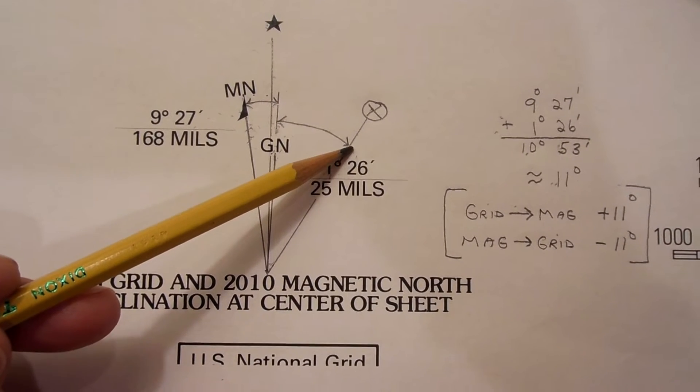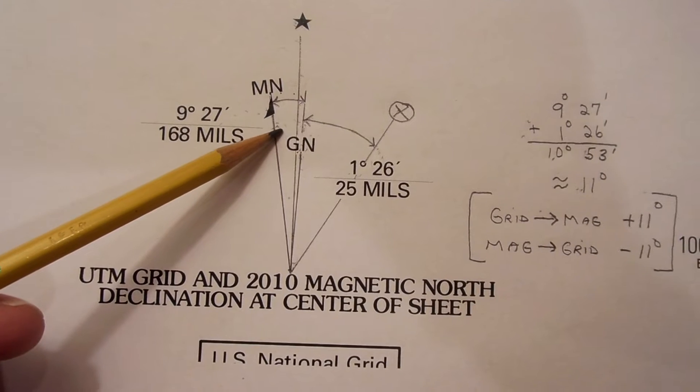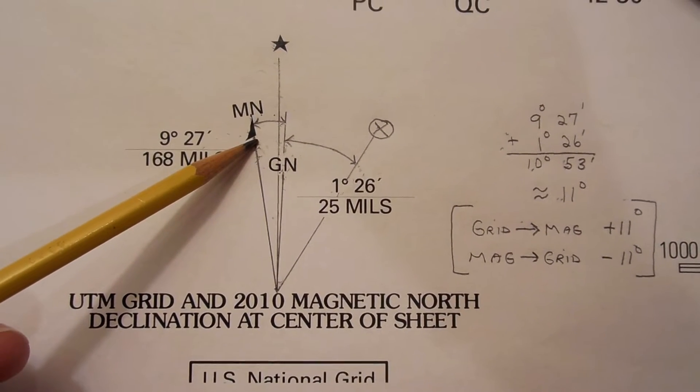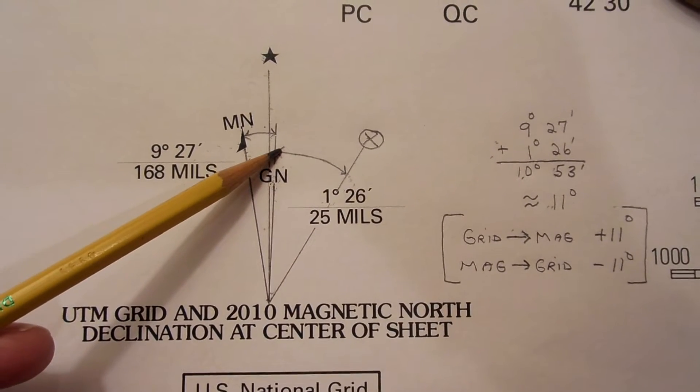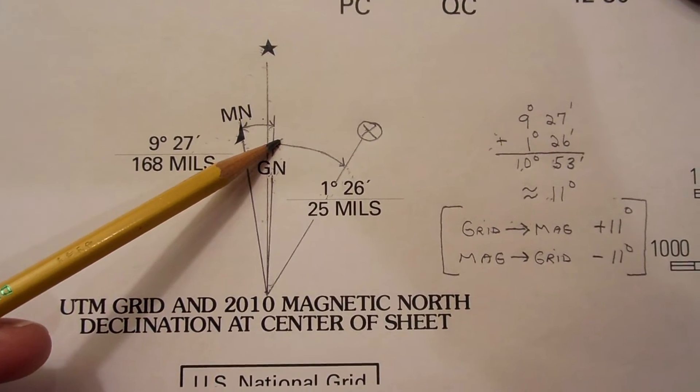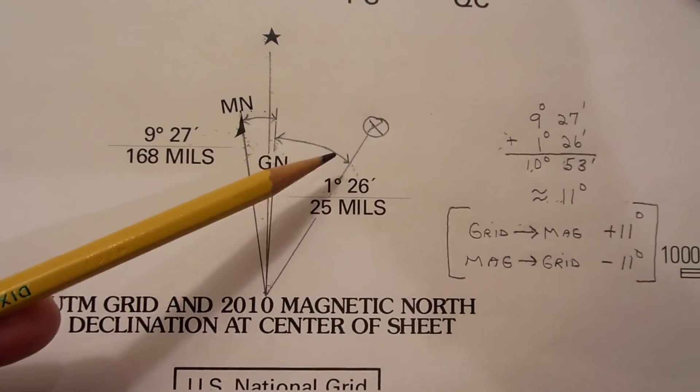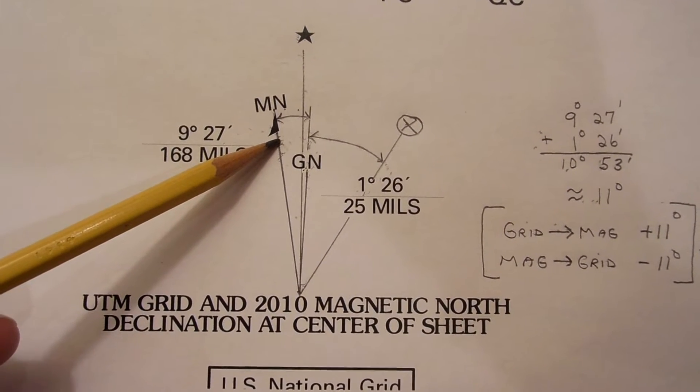But my compass is going to be measuring this bigger angle all the way over here to magnetic north. So on this map, whatever angle I measure on my map, that's a grid angle. I have to add 11 degrees to that, so that I'm actually getting the angle that my compass is going to read, which is way over here.